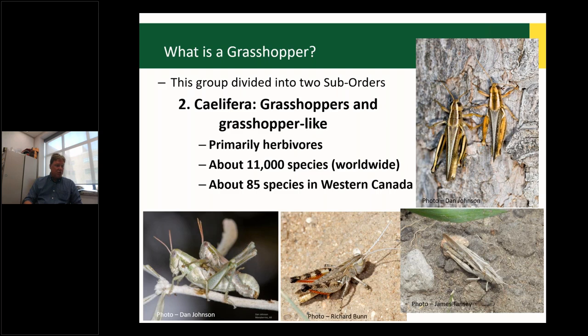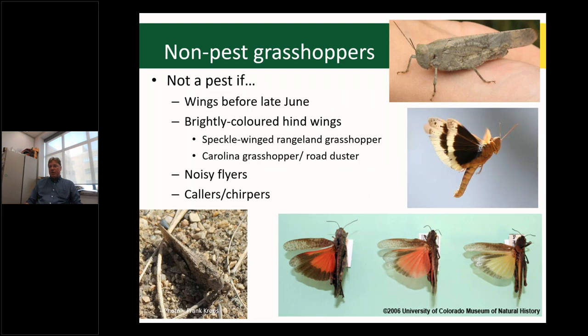Pictured are some non-pest species, though the top right shows two of our pests. We have two-striped grasshoppers — named for the two stripes extending from between the eyes to the tip of the wings — and Packard's, where the two stripes just extend onto the pronotum behind the head and don't extend onto the wings. These are closely related. A good mantra: if it has wings in the spring, it's not a pest.